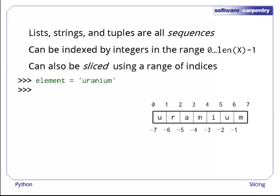To see how slicing works, let's assign the string uranium to the variable element. If we index the string with the expression 1:4, we get back the characters from index 1 up to but not including index 4, i.e. characters 1, 2, and 3.